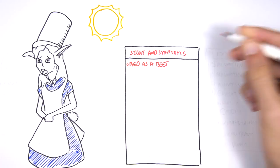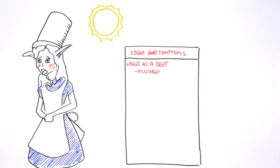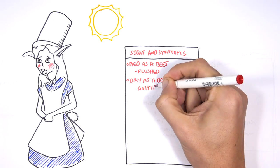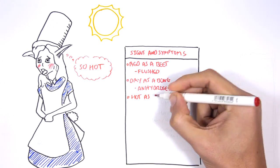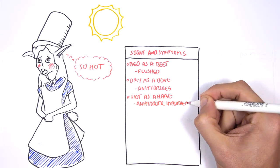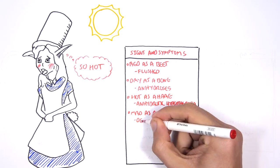Red as a beet which is flushed. Dry as a bone, anhydrosis. Hot as a hair, anti-hydrotic hyperthermia. Mad as a hatter, delirium and hallucinations.